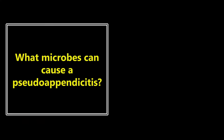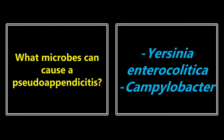First one: what microbes can cause a pseudo-appendicitis? We all know about appendicitis. We need to know the things that can cause a pseudo-appendicitis that can mimic that. There are two big ones you need to know: Yersinia enterocolitica and Campylobacter. Infections with these organisms can mimic appendicitis. Patients may present with right lower quadrant pain and some other GI symptoms, but you want to know that these are mimics of acute appendicitis.